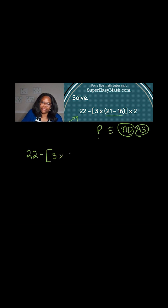Now I'm going to remember that I'm still in my parentheses step, and I'm going to handle the 3 times 5 portion. I have 22 minus 15 times 2.